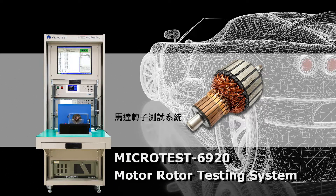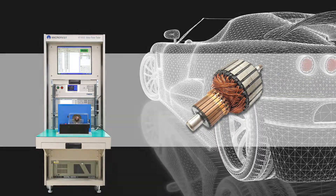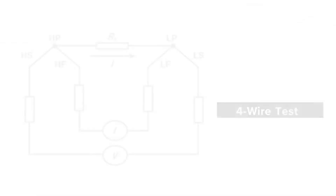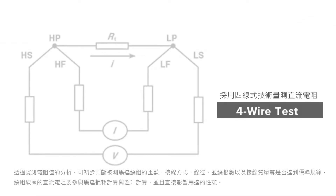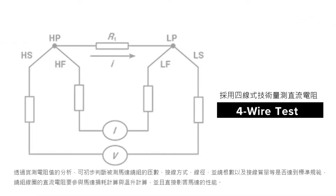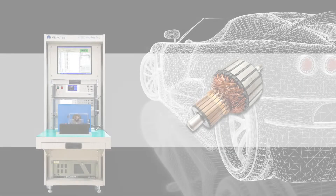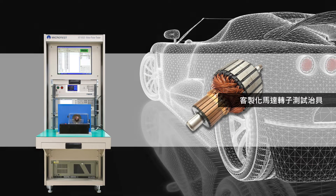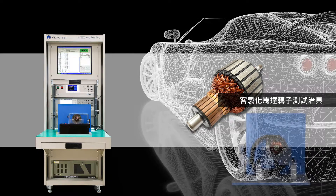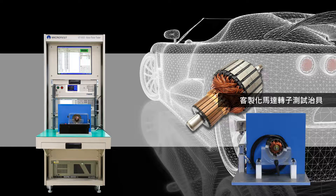Microtest 6920 Motor Rotor Testing System supports 4-wire DC resistance measurement, which will be more accurate than others. It also features a customized test fixture for rotor coil.